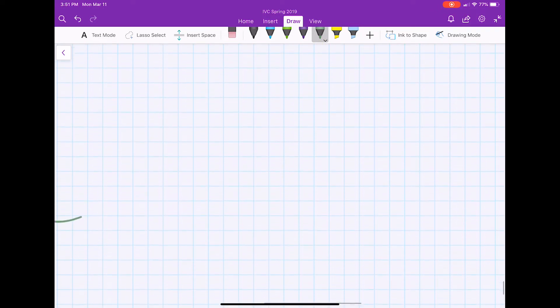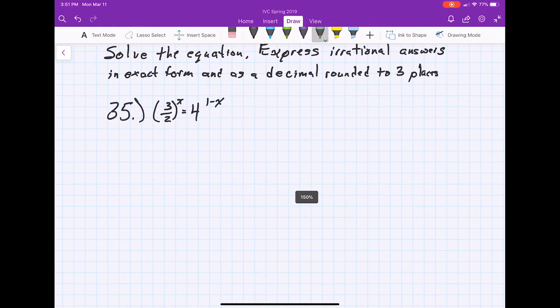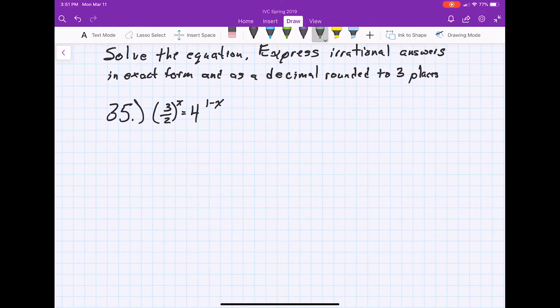So for number 35 we had 3 over 2 to the x power equals 4 to the power of 1 minus x. Notice these bases aren't the same. So the trick to this one is we're going to set them both to ln.